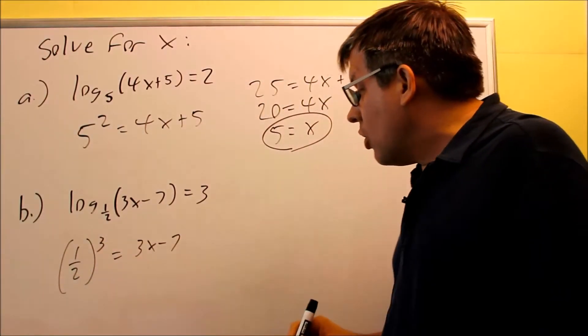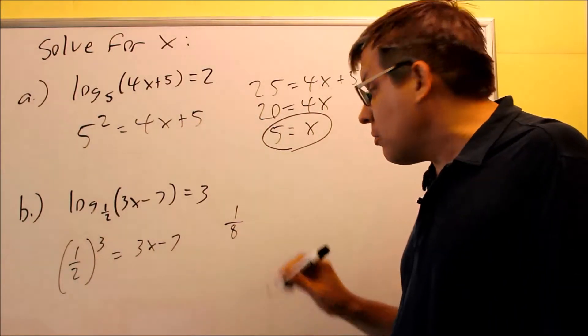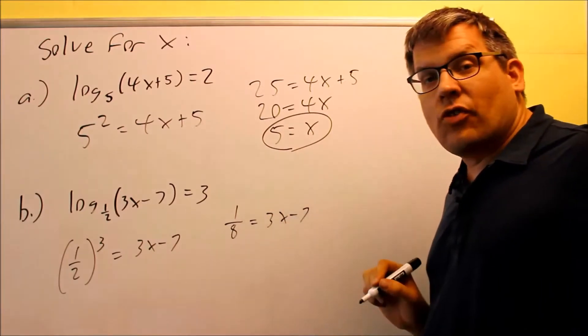When we cube this one, we're going to get 1 over 8, cube the top number and cube the bottom number, that's going to equal 3x minus 7. And now I want to solve this for x.